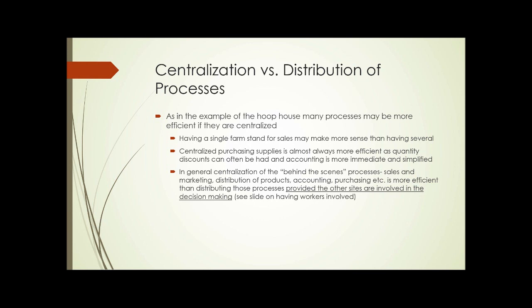In general, centralization of the behind-the-scenes processes — sales and marketing, distribution, accounting, and purchasing — is more efficient than distributing those processes, provided the other sites are involved in the decision-making. Just telling workers at one site what's going to happen can be less efficient than having them involved in decisions about what's going to be planted or how much of each crop, and then purchasing everything centrally to take advantage of quantity discounts and efficiencies.